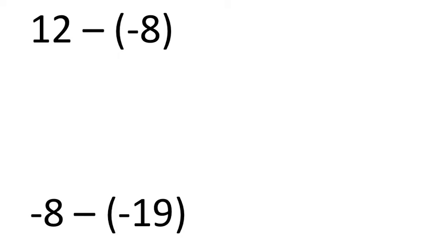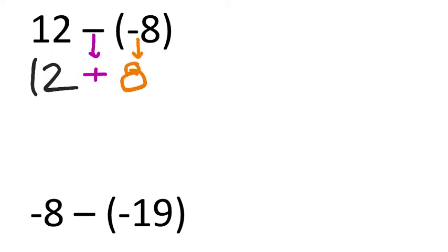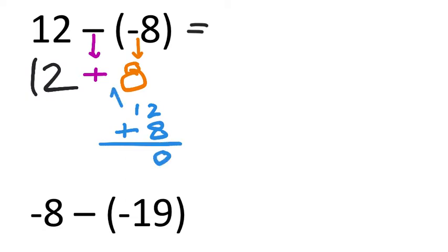12 minus negative 8: whether you prefer keep change change or just changing it to a big plus sign is up to you. Keep the 12, change the subtraction into addition, and change the negative into a positive. This is now a positive plus a positive — that's old-fashioned math. 12 plus 8: 2 plus 8 is 10, carry the 1, 1 and 1 is 2. That gives us positive 20.